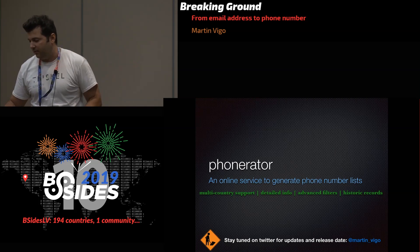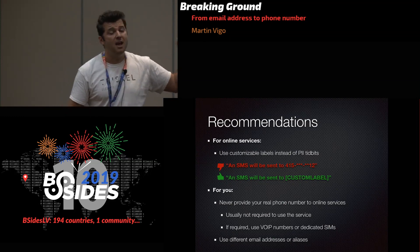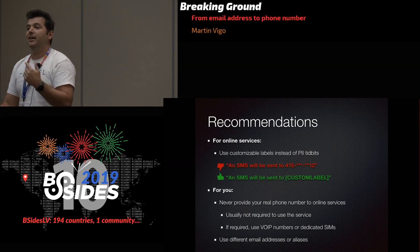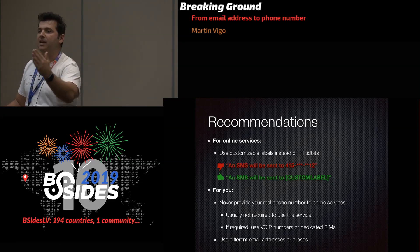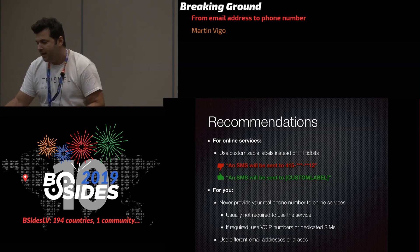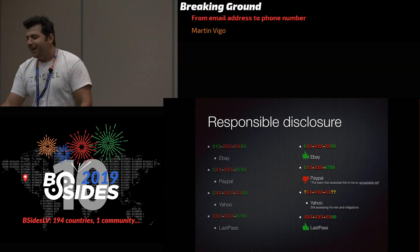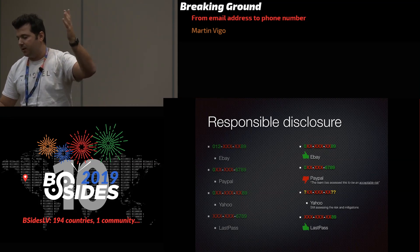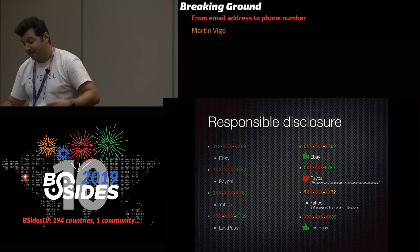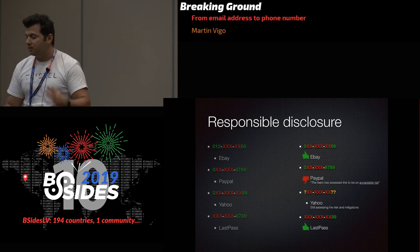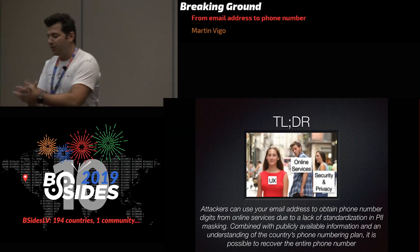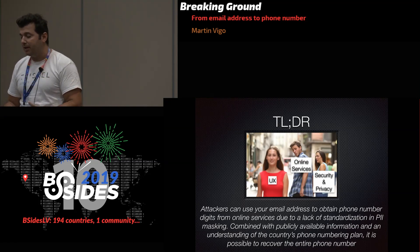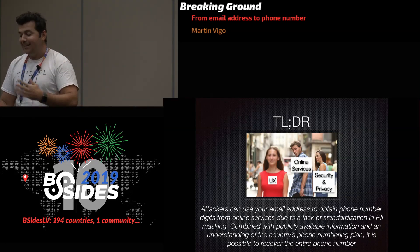Recommendations for online services: use a customizable label instead of showing digits — just say 'send the text to Work Phone' — and don't show digits at all. For users: don't provide your phone number or use a VoIP/voice service. On responsible disclosure: kudos to eBay, they reduced from showing three area code digits to just one. PayPal is still displaying five digits and says it's 'working as designed.' Yahoo is still working on mitigations. LastPass acted immediately and reduced to only two digits. Attackers can use your email address to obtain phone number digits from online services due to a lack of standardization in PII masking. Combined with publicly available information and an understanding of the country's phone numbering plan, it is possible to recover the entire phone number.